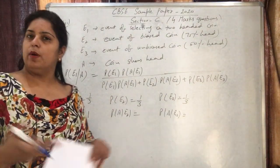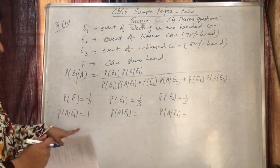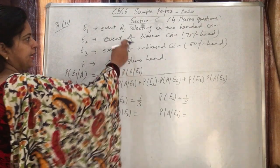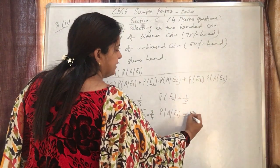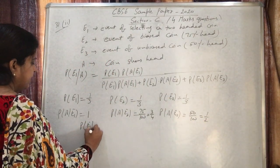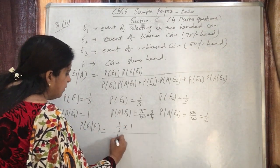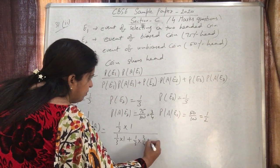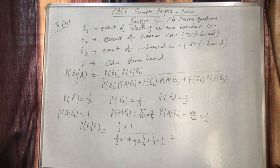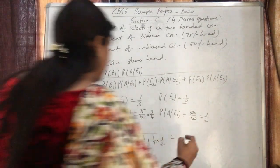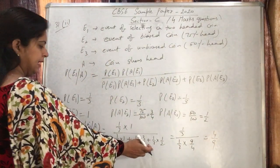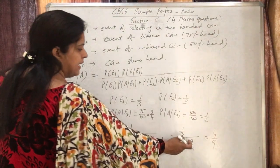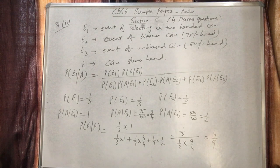Substituting into Bayes' formula: P(E1|A) = (1/3·1) / (1/3·1 + 1/3·3/4 + 1/3·1/2). Taking 1/3 common from numerator and denominator, they cancel. The denominator becomes 1 + 3/4 + 1/2 = 9/4. Therefore P(E1|A) = 1/(9/4) = 4/9. That completes question 31.